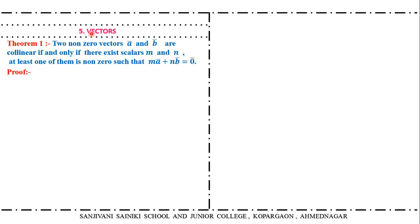We will study one theorem. Two nonzero vectors A bar and B bar are collinear if and only if there exist scalars M and N, at least one of which is nonzero, such that M·A bar plus N·B bar is equal to zero bar. That means A bar and B bar are collinear if their linear combination is zero.